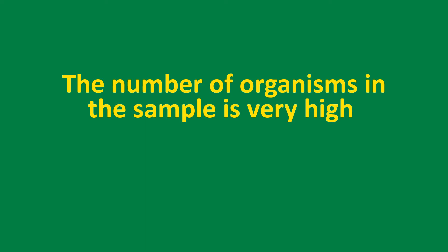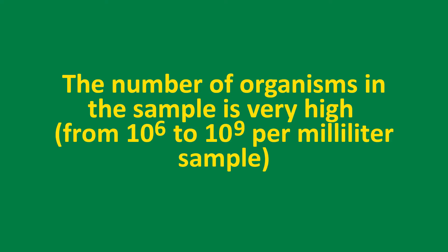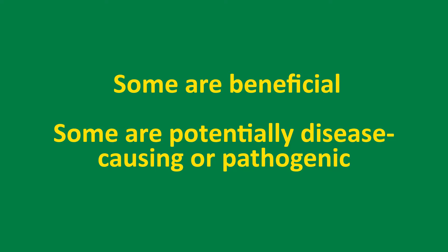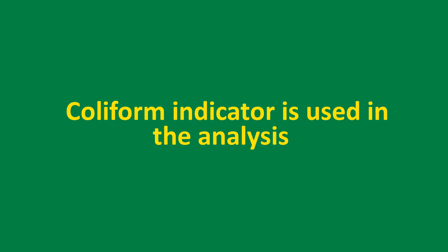The number of organisms in the sample is very high — from 10 to the power of 6 to 10 to the power of 9 per milliliter. Some are beneficial and some are potentially disease-causing or pathogenic. It is very difficult to measure the concentration of these pathogenic organisms, so a coliform indicator is used in the analysis.